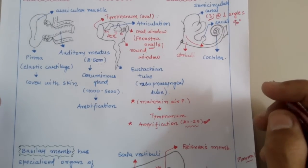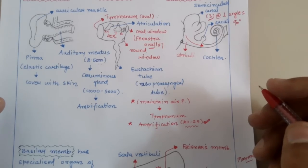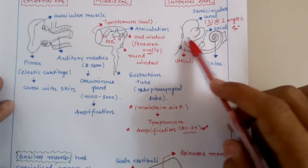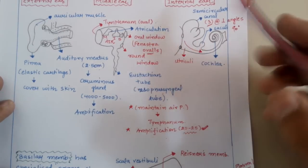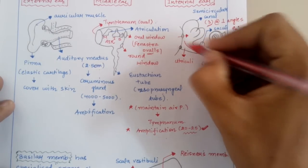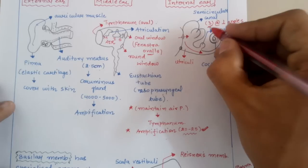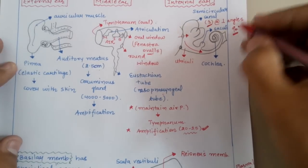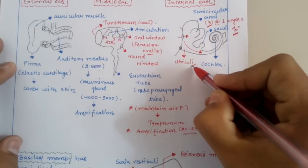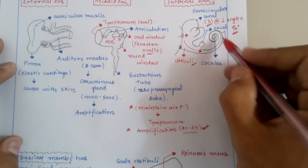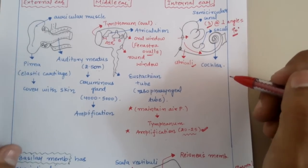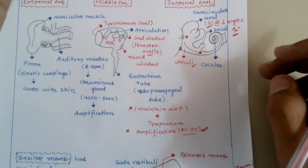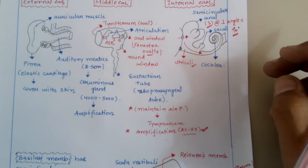The sound waves enter the internal ear from the middle ear via the oval window. The internal ear is formed up of three semicircular canals, all present at right angles — that is, 90 degrees or perpendicular — to each other. It also contains the utriculus, sacculus, and a coiled portion known as the cochlea. When we join all three diagrams together, we realize they form a single complete diagram of the ear.